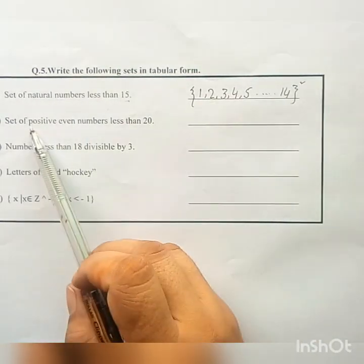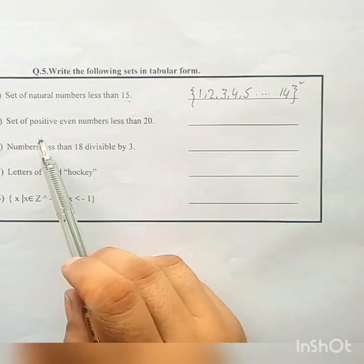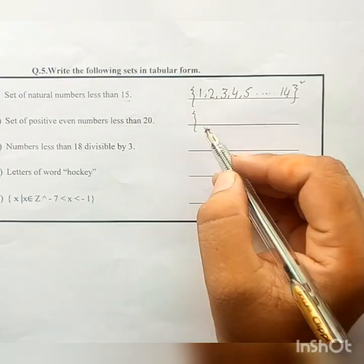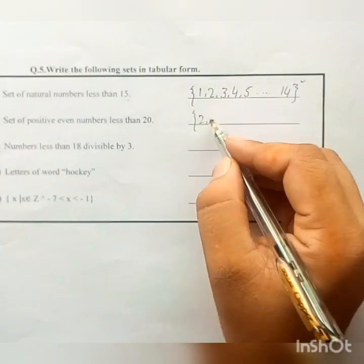Set of positive even number less than 20. Again, in set descriptive form, set of positive even number less than 20: {2, 4, 6,